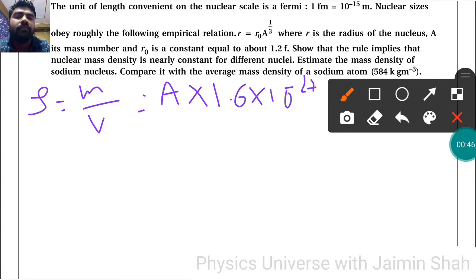Why this number 1.6? Because nucleons are protons and neutrons, and that is the mass of one proton. Mass of one proton times the nuclear number gives us the whole mass of the atom.